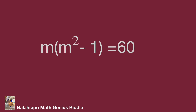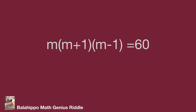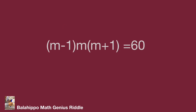Factorize m squared plus 1 so that we get m times the quantity m plus 1 multiplied by the quantity m plus 1, equal to 60. We notice the quantity differences: m and m plus 1 differ by 1, and m plus 1 and the next term also differ by 1. We adjust the sequence to become m times (m plus 1) times (m plus 1) equal to 60.